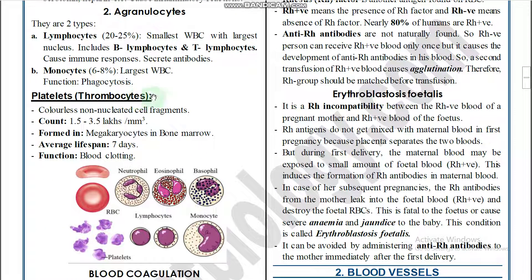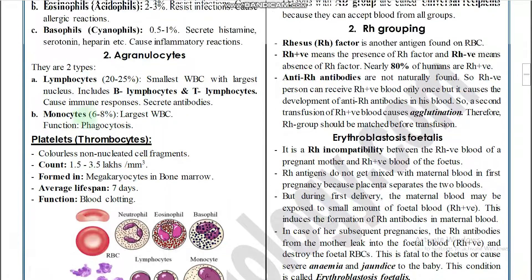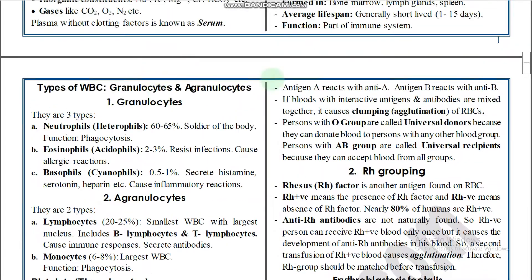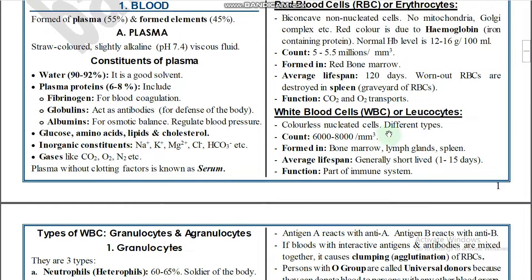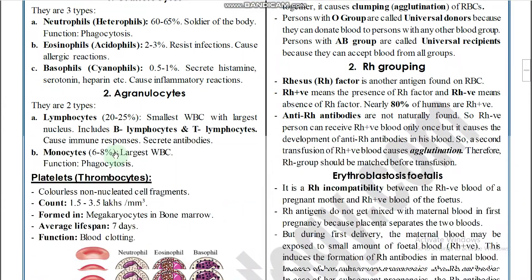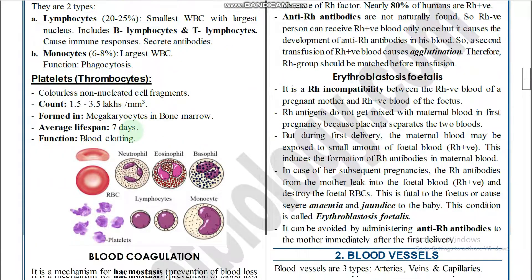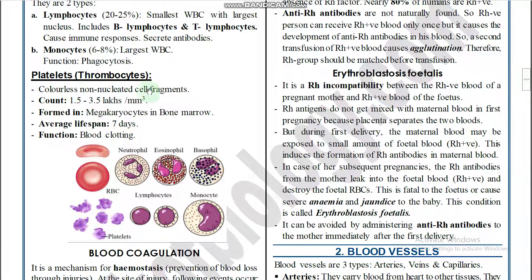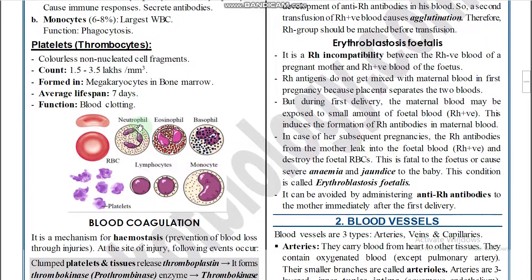Blood platelets are also called thrombocytes. RBCs are called erythrocytes, WBCs are called leukocytes, and blood platelets are also called thrombocytes. They are colorless, non-nuclear cell fragments with a count of 1.5 to 3.5 lakhs per mm cube. They are formed from megakaryocytes in the bone marrow, and their average lifespan is seven days.